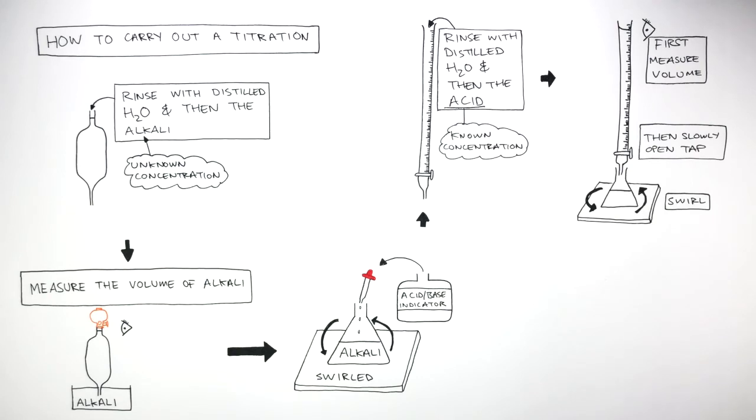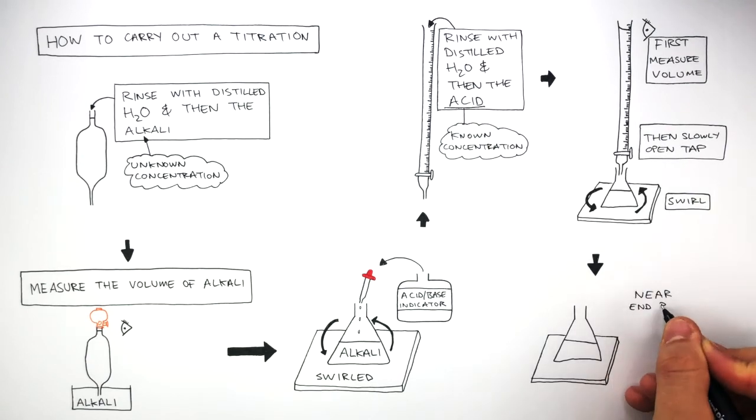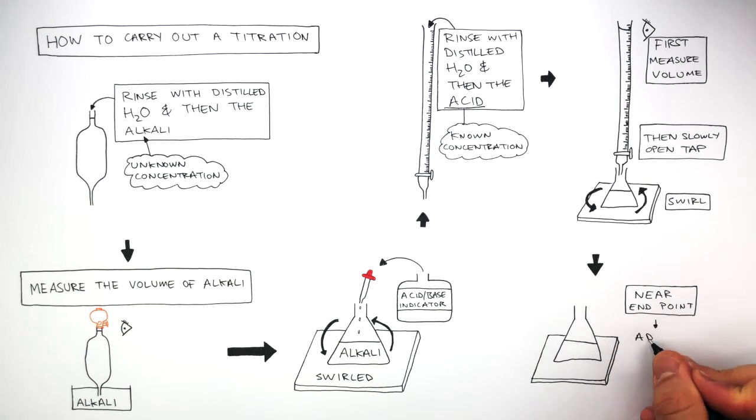The point at which an acid and an alkali have completely reacted is the end point. Near the end point, the acid is added drop-wise, one drop at a time, until there is a complete colour change. At this exact moment, neutralisation has taken place. This is the end point.